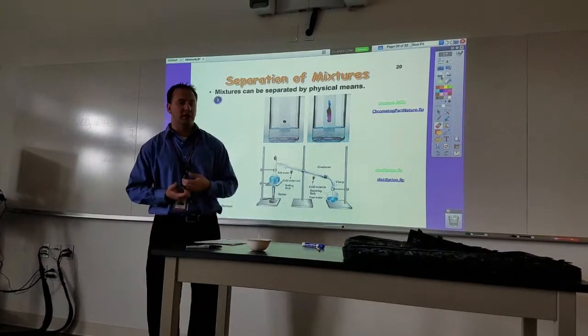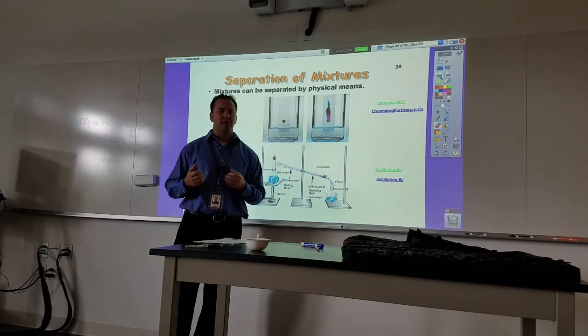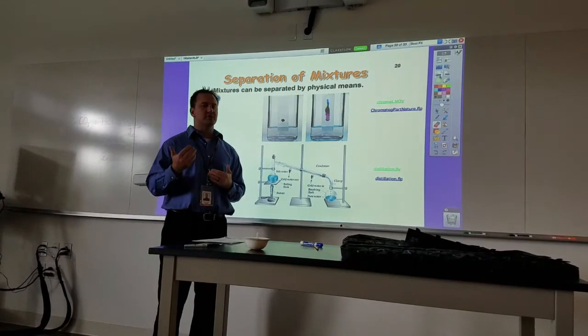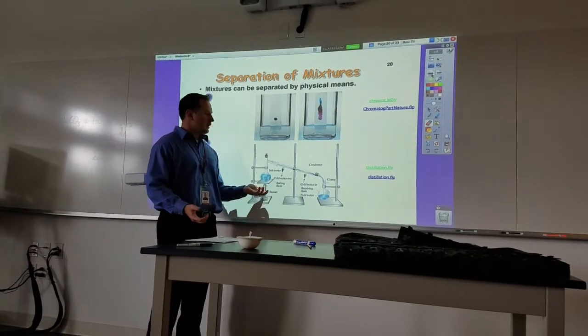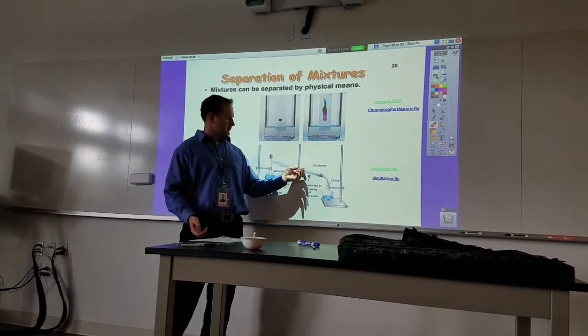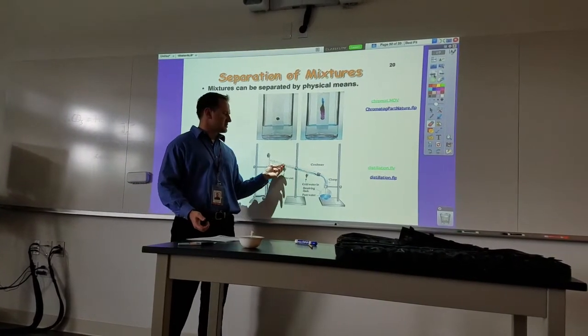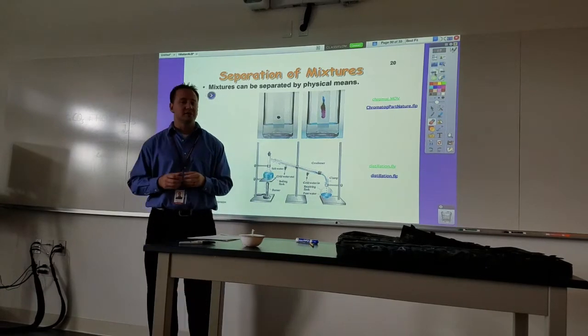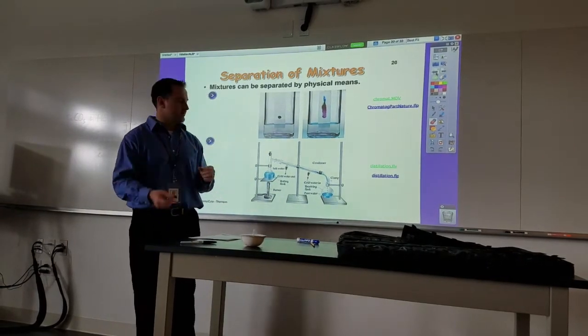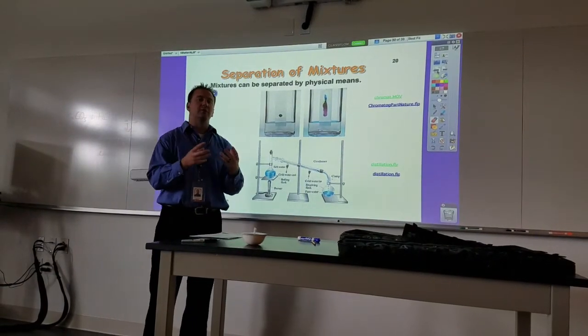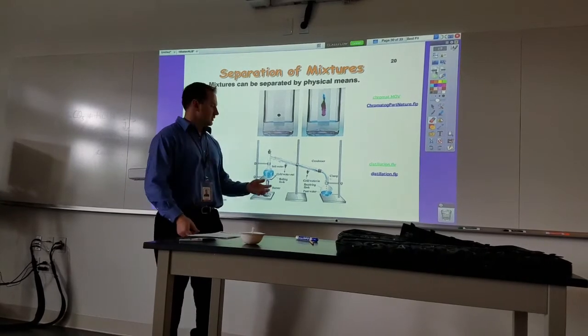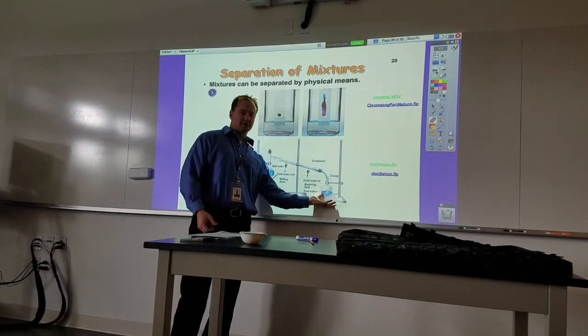For example, if you had ethanol in water, ethanol will evaporate or boil at a lower temperature than water. As you're heating it, all of the ethanol will boil off first, and then it passes through what's called the condenser tube. The condenser tube contains cold water flowing around it and makes it cool down and go back from being a vapor into a liquid, which can then be collected in the receiving flask.